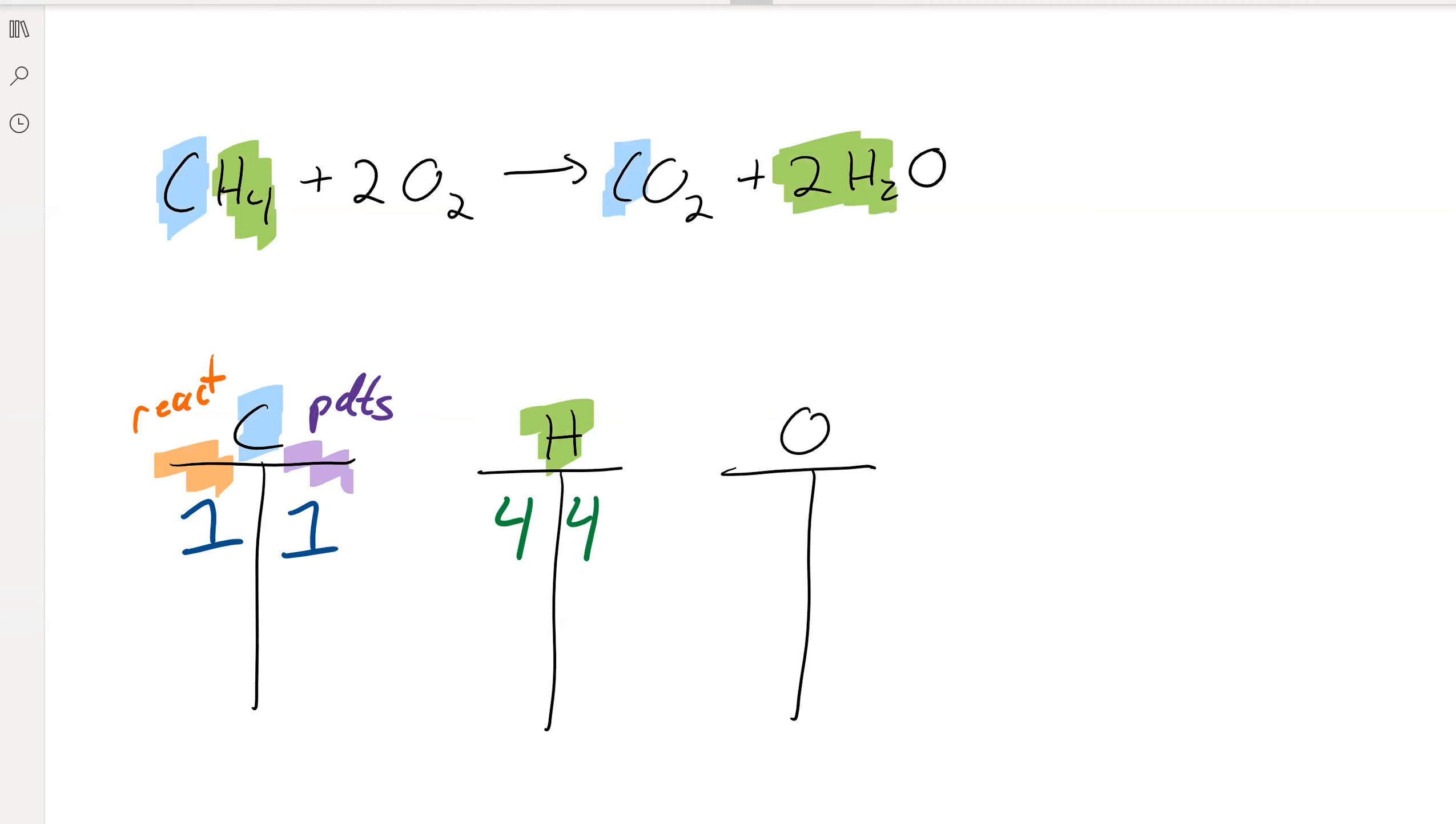And then finally, oxygen. On the reactant side, we have two O2s, which is four total atoms of oxygen. And on the right side, we have an O2 there, and then we have two waters over here, which adds up to a total of four oxygens. And so what we can see is that this equation is indeed balanced.